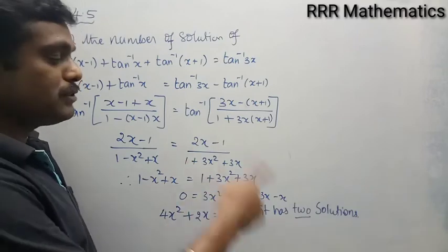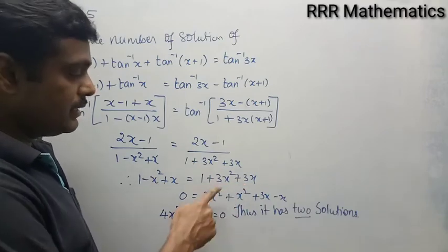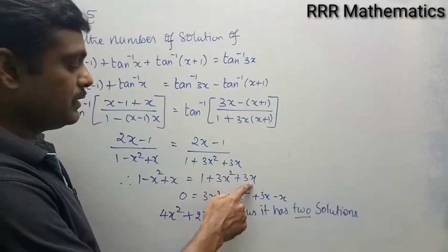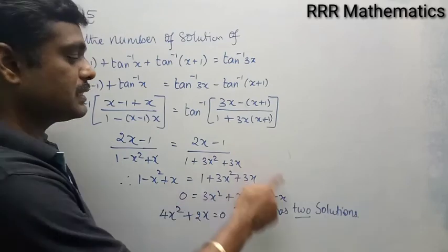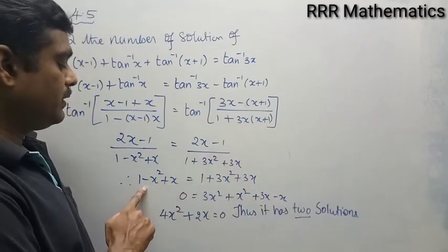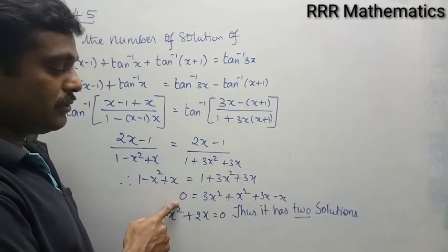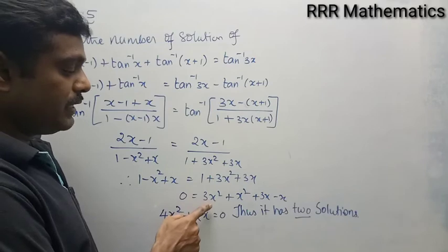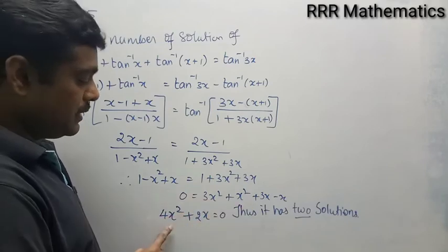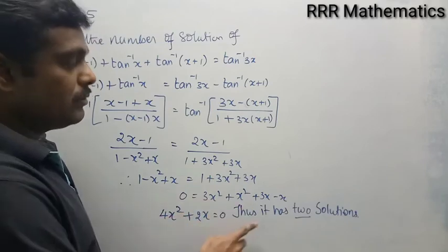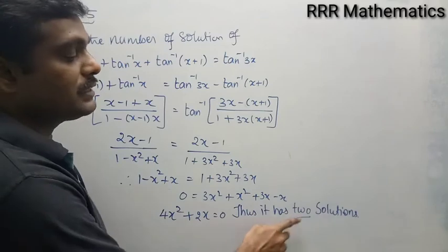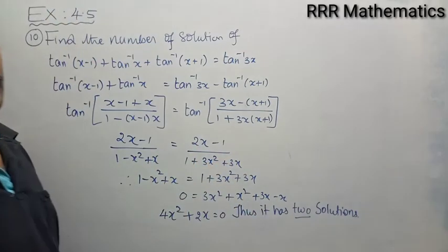When we rearrange — 3x squared plus x squared gives 4x squared, and 3x minus x gives 2x, and the 1's cancel — we get 4x squared plus 2x equals 0. This is degree 2, so the number of solutions is 2.